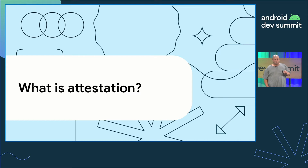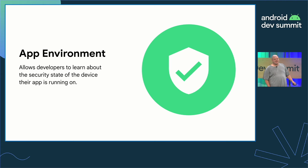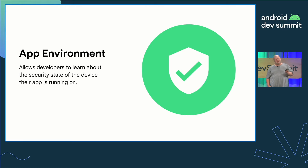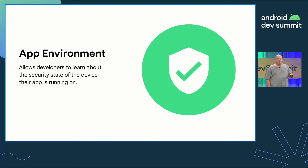The API should be used as part of your abuse detection system to help determine whether your servers are interacting with your genuine app running on a genuine Android device. You should think of this as a full description of the environment that your app is running in that you can see before you allow the user to take action. This helps developers assess the boot time integrity specifically and determine if the Android security model is being enforced.